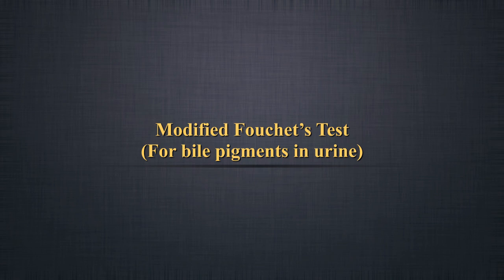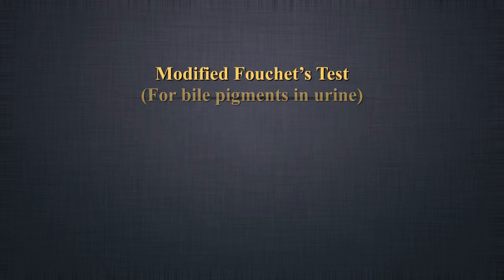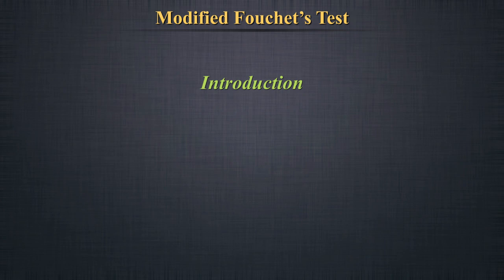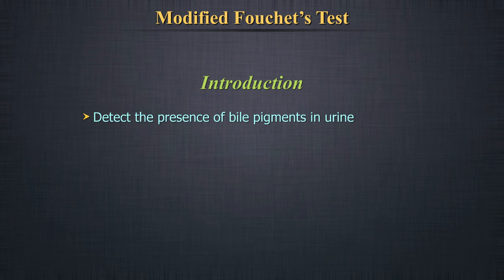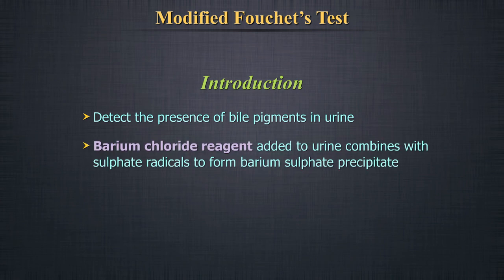The Modified Foscis Test is used to detect the presence of bile pigments in urine. When barium chloride reagent is added to urine, it combines with sulphate radicals in urine and a precipitate of barium sulphate is formed. Bile pigments present in urine will adhere to these large molecules.